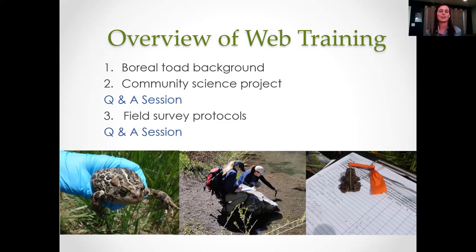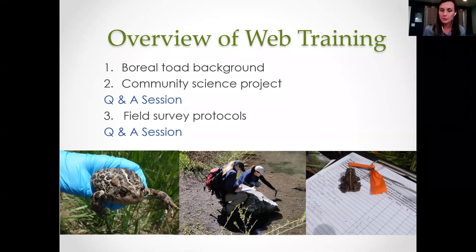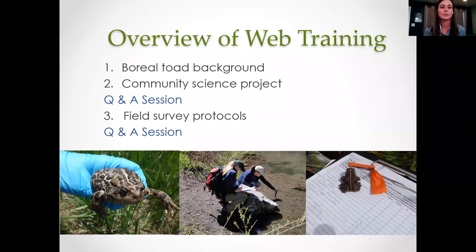So, a quick overview of the training. This first chapter will be all about the boreal toad, its background and life histories. Then we're going to flip to our community science project — what is community science, what is this project all about? Then we're going to break for five to ten minutes and have an open question and answer session before diving into field survey protocols. In that section, we'll go over field gear and the data sheet that everyone uses, including the DWR and the Forest Service. Then we'll wrap up with a final Q&A.